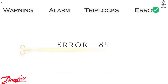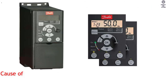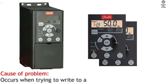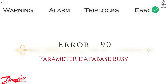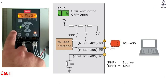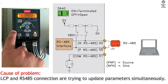Error 89: Parameter Read-Only. Cause of Problem — occurs when trying to write to a read-only parameter. Error 90: Parameter Database Busy. Cause of Problem — LCP and RS-485 connection are trying to update parameters simultaneously.